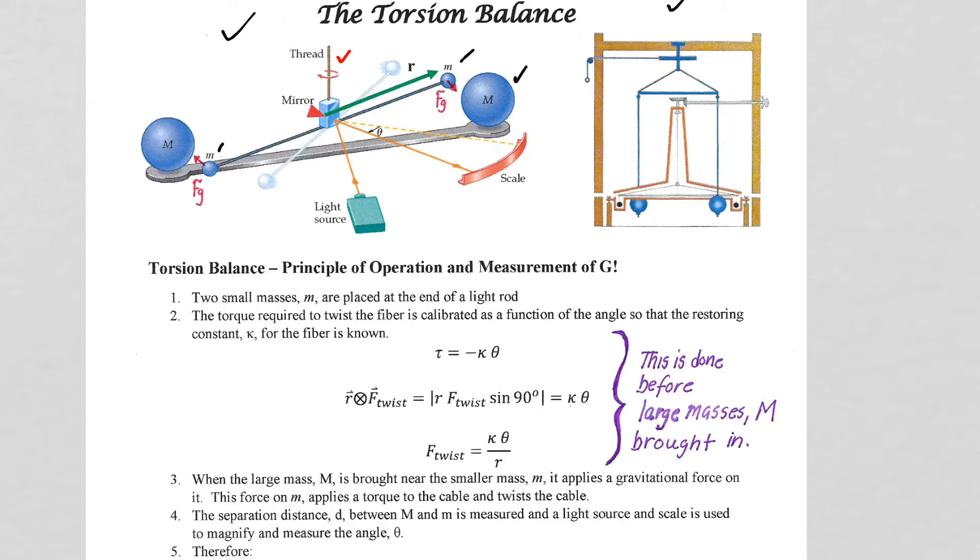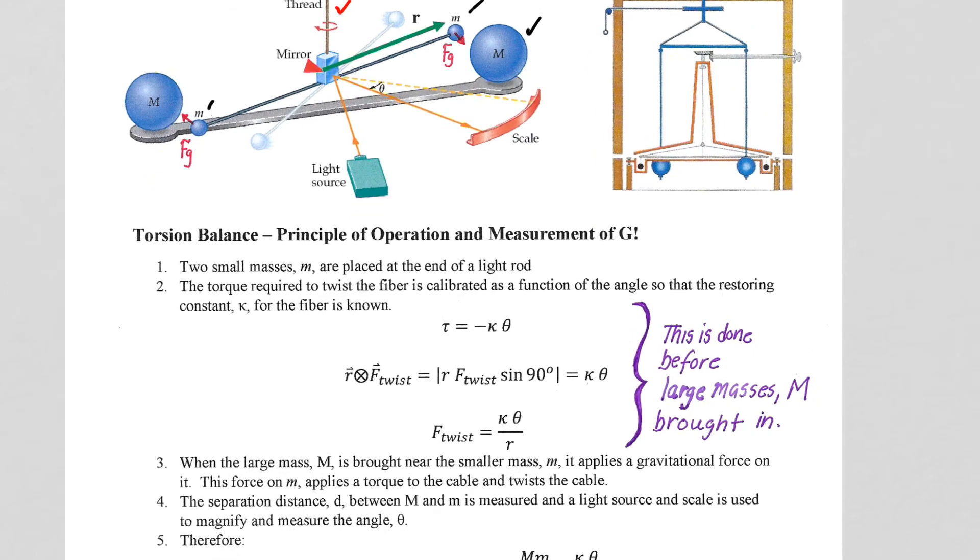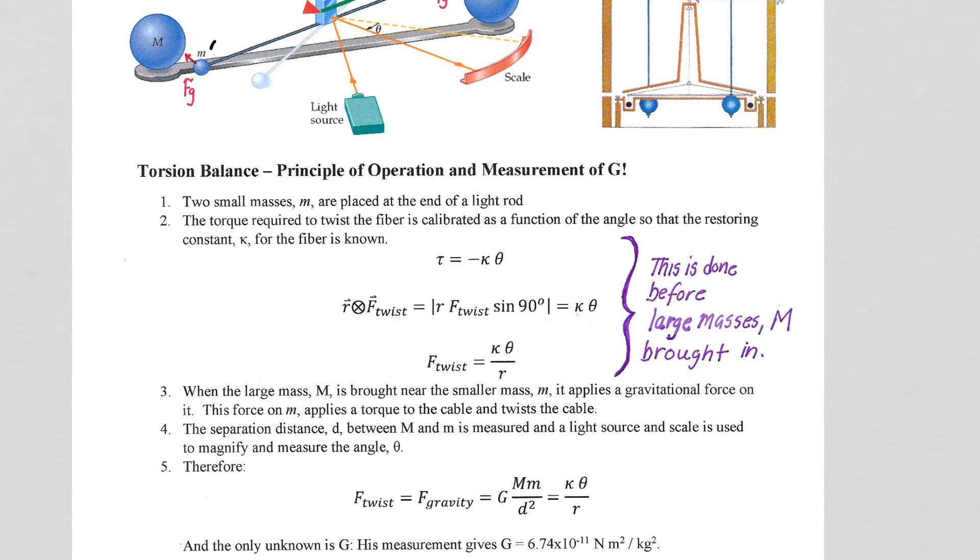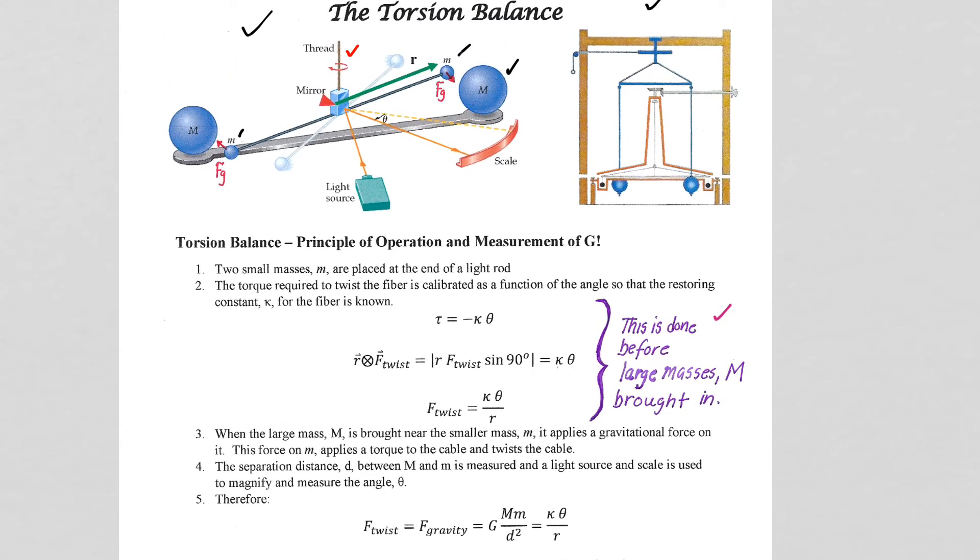So before he could actually do his experiment, and this is important, so please get this part down in your notes, Cavendish needed to have the torsion balance calibrated. We know from our torsion pendulum that the twist of that fiber, that torque, will equal negative kappa theta for small angles theta. And what Cavendish first had to do was put known forces.